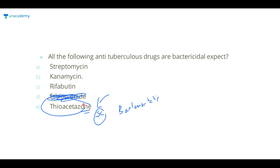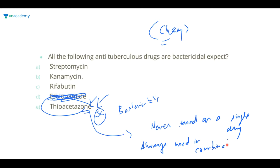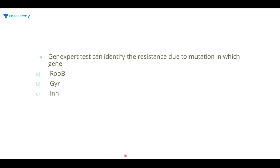From NEET 2020 onwards, notes alone will not be enough — you have to understand the concept in depth. Thioacetazone is very commonly used in central Africa because it is extremely cheap compared to all other drugs, but it can never be used as a single drug — it is always used in combination. These three (streptomycin, kanamycin, rifabutin) are bactericidal. Thioacetazone is bacteriostatic. If ethionamide was asked, it is also bacteriostatic with minimal bactericidal activity.